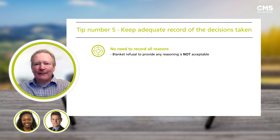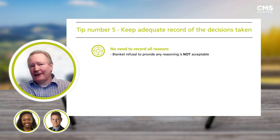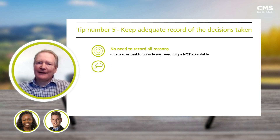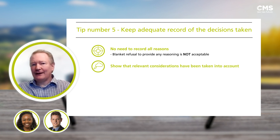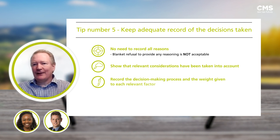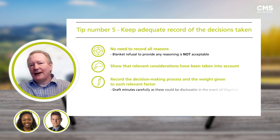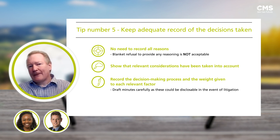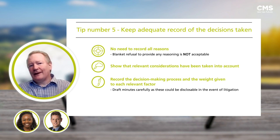What we would say is that minutes and memos relating to the exercise of a discretionary death benefit case should be carefully drafted. You do need to show the relevant considerations have been taken into account, and it's preferable to record the actual decision-making process and the weight given to the various factors, whilst remaining sensitive to the case itself. The trustees should write minutes on the basis that they would be disclosable in the event of litigation.